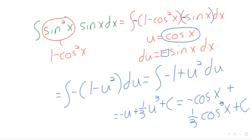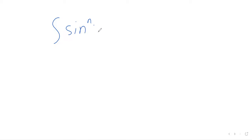Now if this were just a trick that let us deal with sine cubed and nothing else, it would be of pretty limited interest — we could hardly have an entire section of the textbook dedicated to it. But this trick of using the Pythagorean identity to rewrite a trig function and then use u-substitution is actually pretty powerful. This trick lets us integrate powers of sine times powers of cosine.